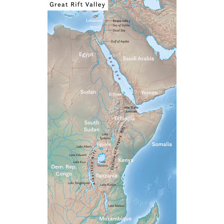In this video we're going to talk about the rift valley region. A rift valley is a lowland region that forms where Earth's tectonic plates move apart or rift. They are found both on land and also at the bottom of the ocean.